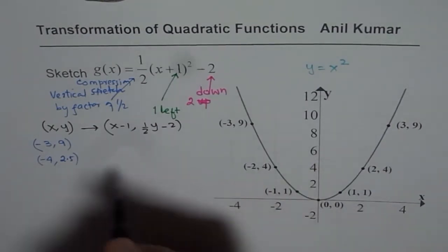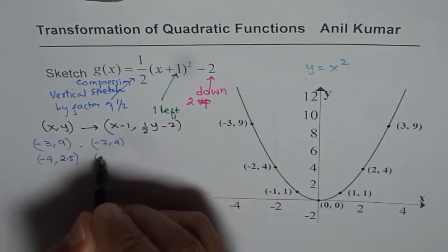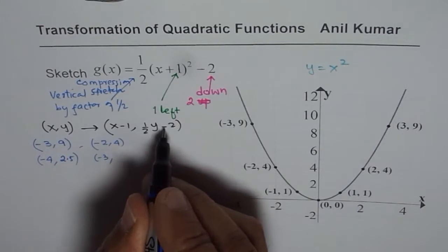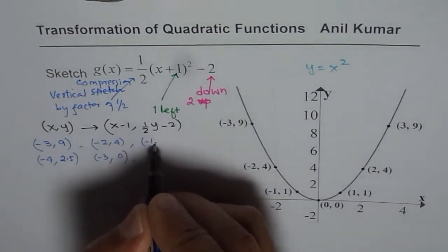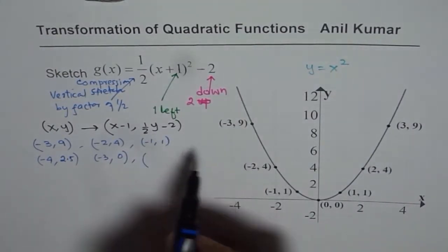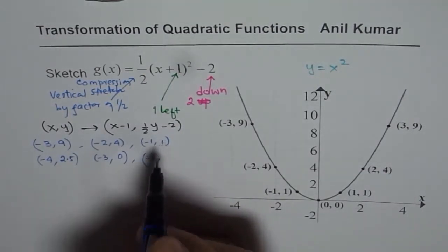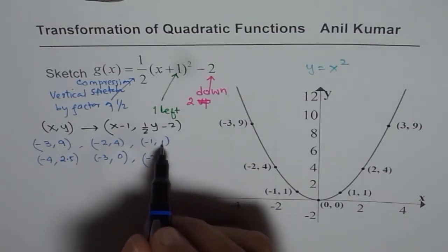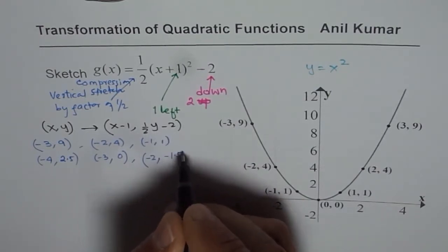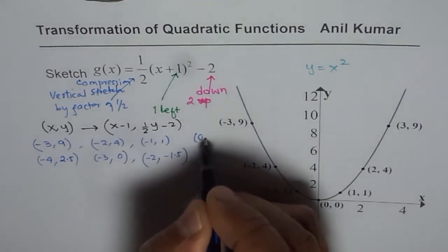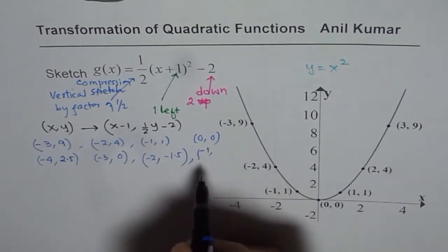The next point is (-2,4). 1 less than -2 is -3, half of 4 is 2, 2 minus 2 is 0. Then we have (-1,1). Take away one more from -1 gives you -2. Half of 1 is 0.5, taking away 2 from 0.5 will be -1.5. Then we have (0,0). 1 less than 0 is -1 and half of 0 is 0, then minus 2.